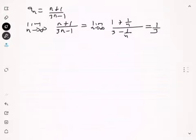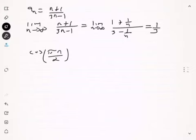Let's take a look at another sequence: cosine of pi n divided by 2. We're going to see whether this sequence converges or diverges by finding the first few terms.